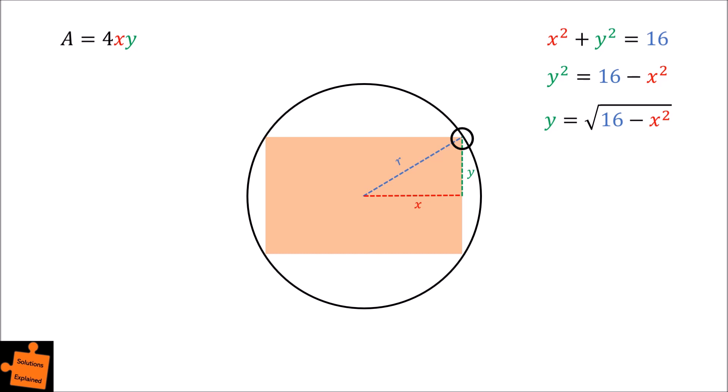In index notation, a square root is the same as a half power, so we can instead write y is equal to 16 minus x squared all to the power of a half. This will be useful later on when we need to use calculus.